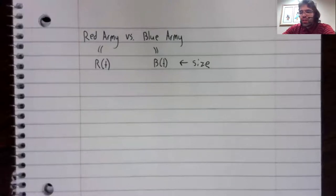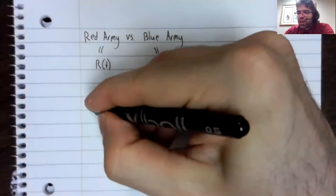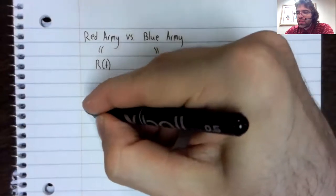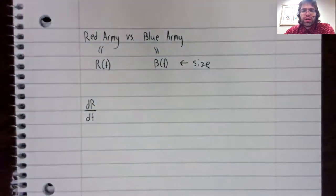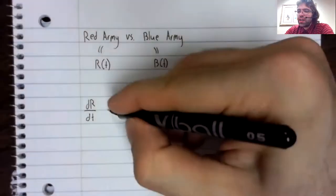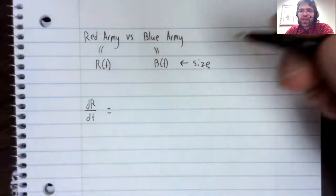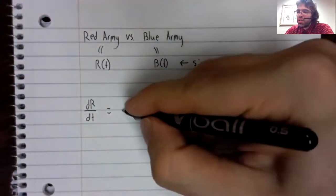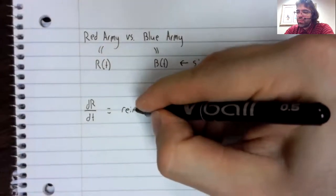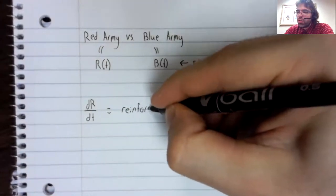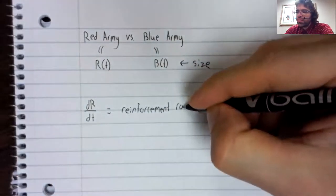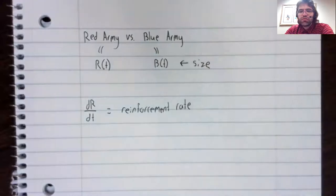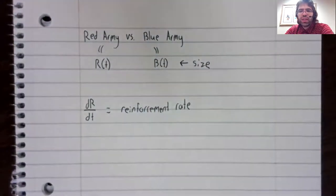And there, we'll look at Red Army as our example. There are three things that happen to change the size of Red Army. Well, first of all, they could receive reinforcements.